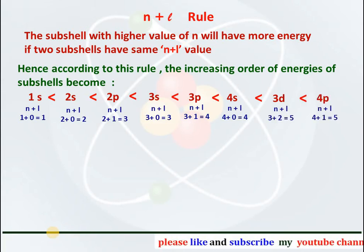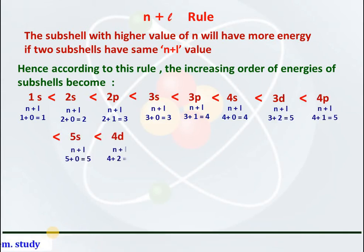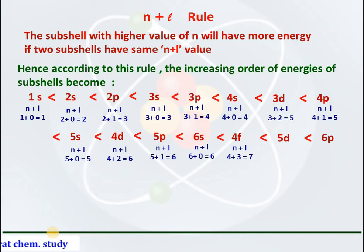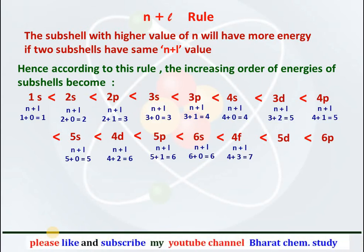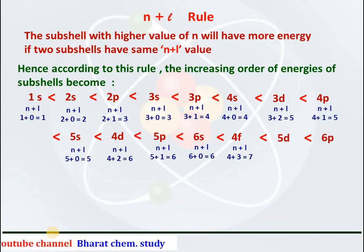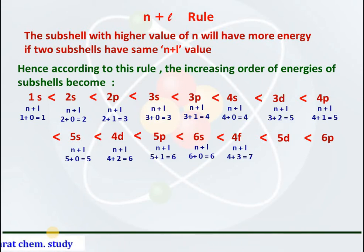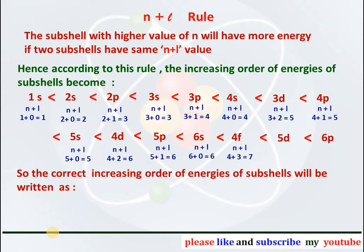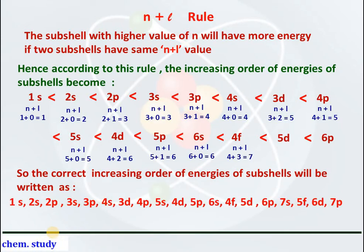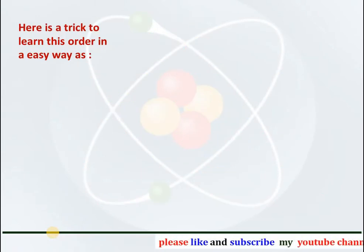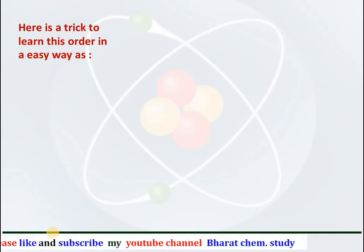So the correct increasing order of energy of subshells is: 1s, 2s, 2p, 3s, 3p, 4s, 3d, 4p, 5s, 4d, 5p, 6s, 4f, 5d, 6p, 7s, and so on. The correct increasing order has 1s having the lowest energy, then 2s, 2p, 3s, 3p, 4s, 3d, and so on. Here is an easy trick to learn this order.